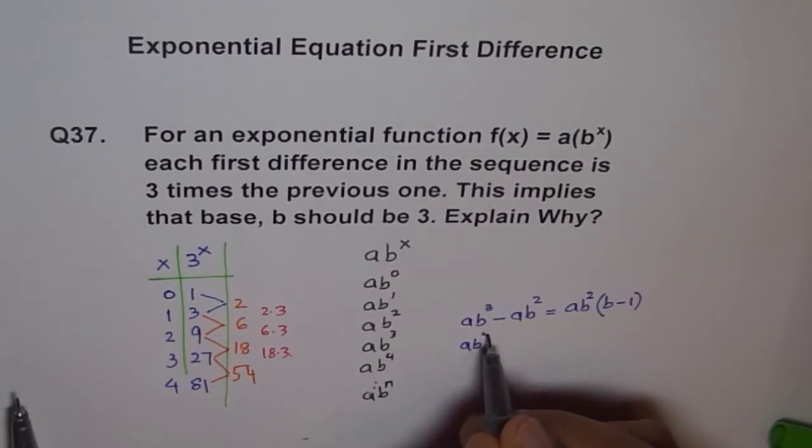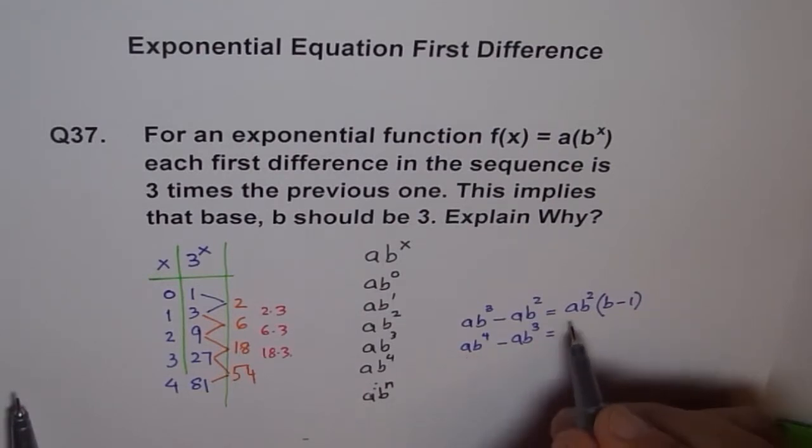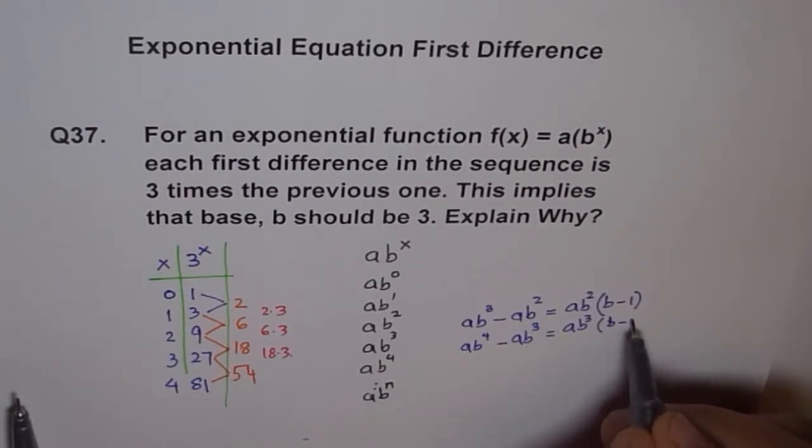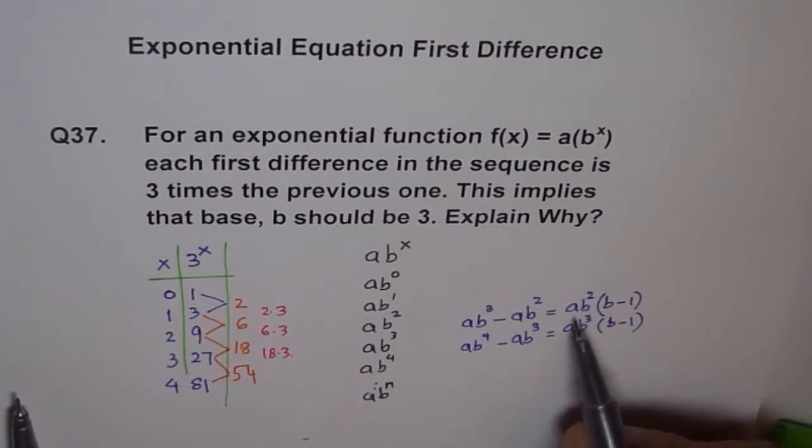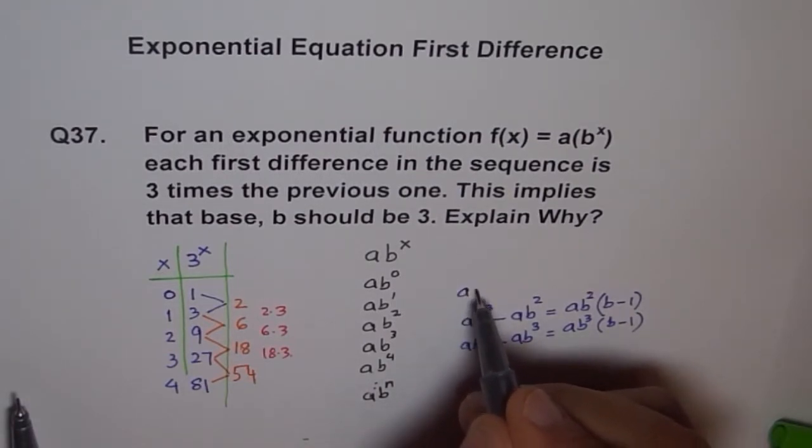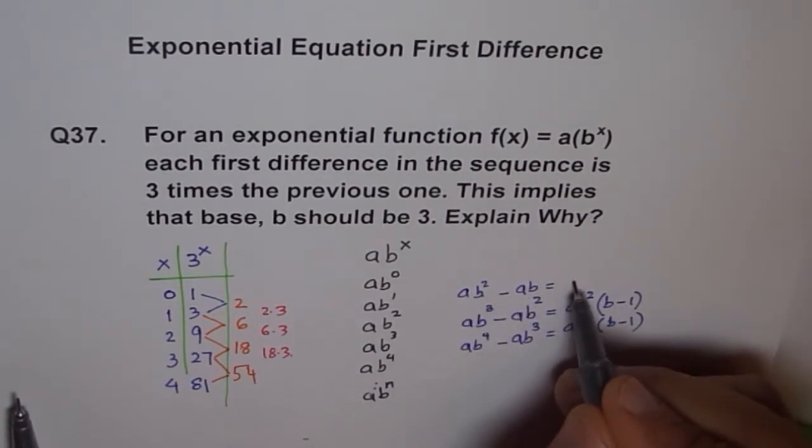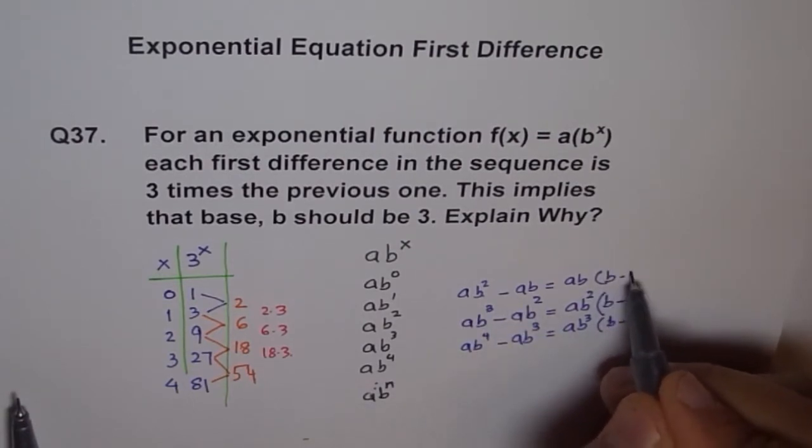If I do this difference, that is ab to the power of 4 minus ab cube, this time what will I take common? I will take ab cube common, and I will be left with b minus 1. So you will see that I am always left with, in my difference, b minus 1. Here also I can take ab square minus ab. Then if I do this, I can take ab common, and I can factor out b minus 1, b minus 1.